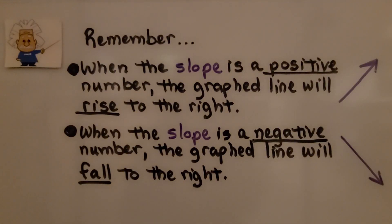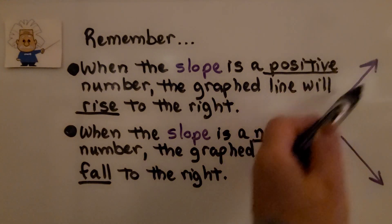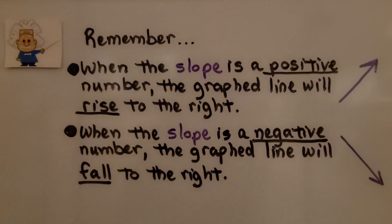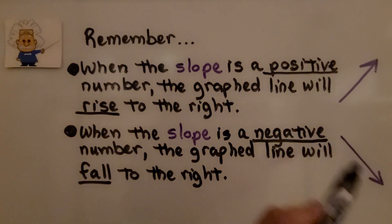Remember, when the slope is a positive number — that m in the equation — the graphed line will rise to the right. And when the slope is a negative number, the graphed line will fall to the right.